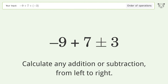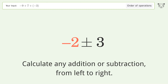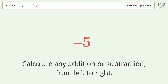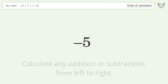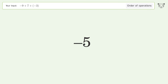Calculate any addition or subtraction from left to right. Negative 9 plus 7 equals negative 2, then negative 2 minus 3 equals negative 5. And so the final result is negative 5.